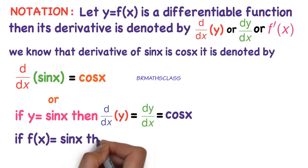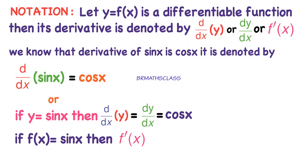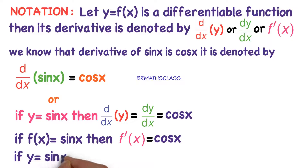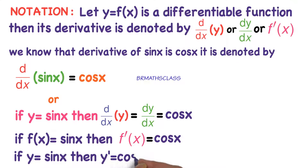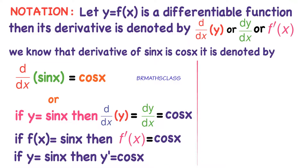In another way, we can write like this also. If f of x equals to sin x, then f dash of x equal to cos x. f dash of x means derivative of f of x. If y is equal to sin x, then y dash is equal to cos x. y dash is also a type of notation for its derivative — y dash means derivative of y.